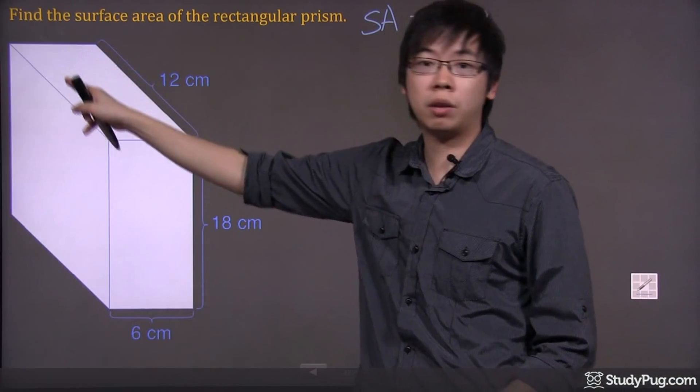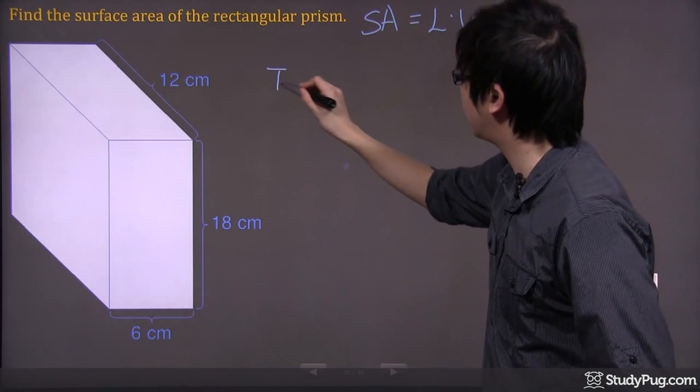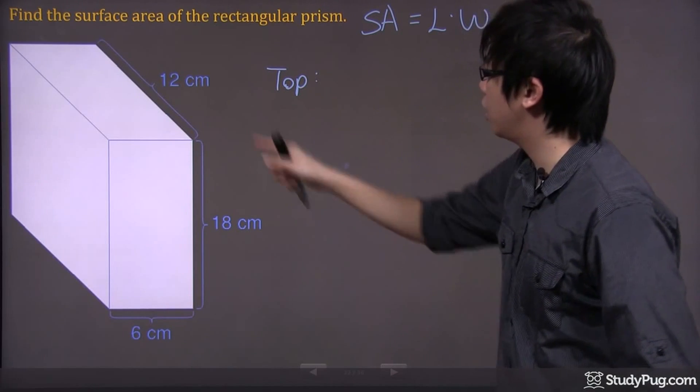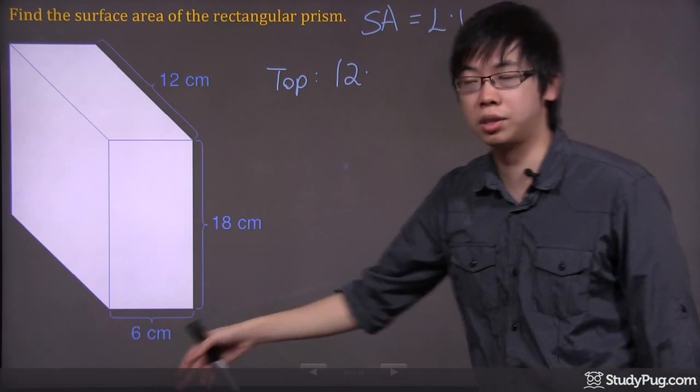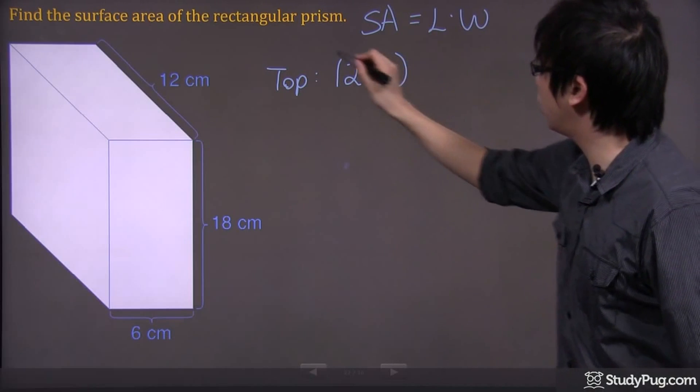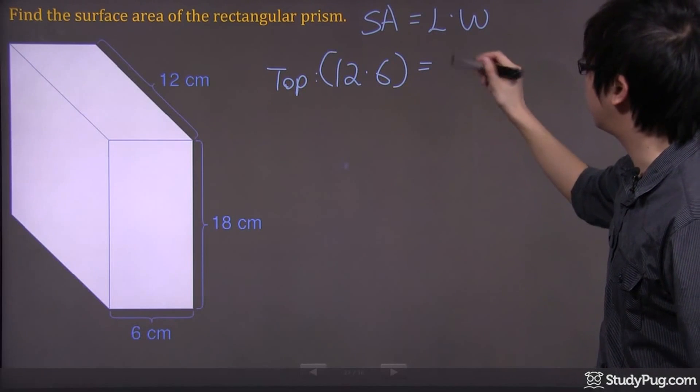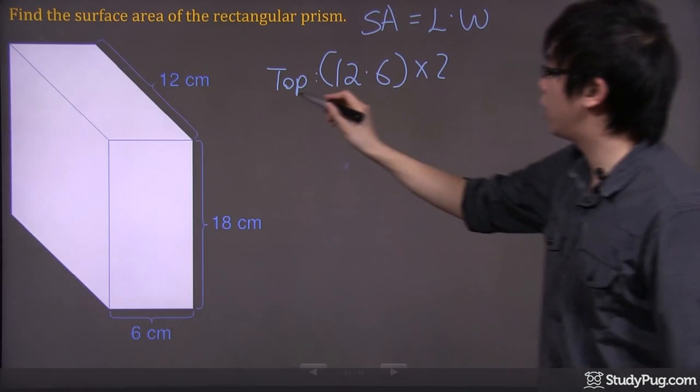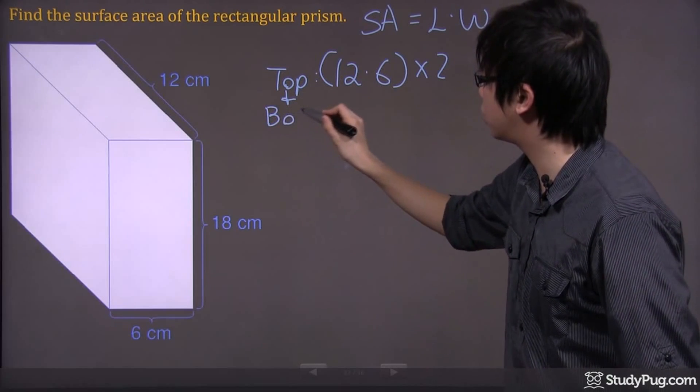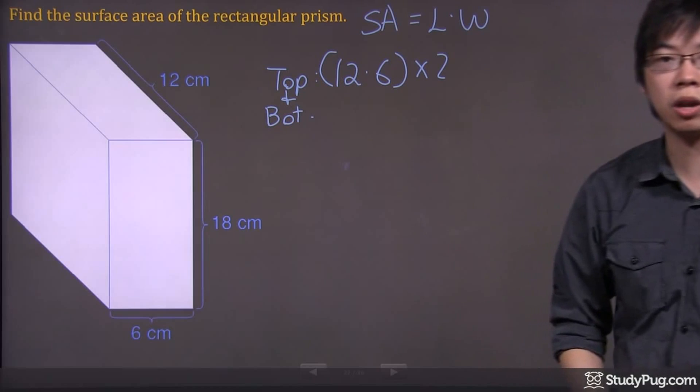When we do this, let's figure out the area of the top piece first. Let me write down the word 'top' right here. So I've got 12 times the width, which is 6. And I know immediately I'm going to have to multiply it by 2, and the reason for that is because we've got the top and the bottom. So let me write down 'bot' to represent the bottom.